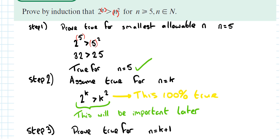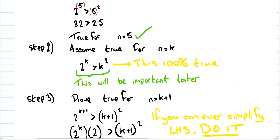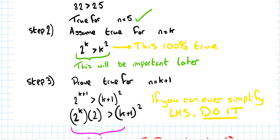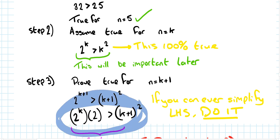Step 3: prove true for n equals k plus 1. Anywhere we have n, substitute in k plus 1. Now on the left hand side, if you can simplify it, do it. You absolutely can simplify it — splitting it apart like we did in the previous section, using page 21 of the log tables, the top left hand corner, the very first rule. This is what I want to show is true.